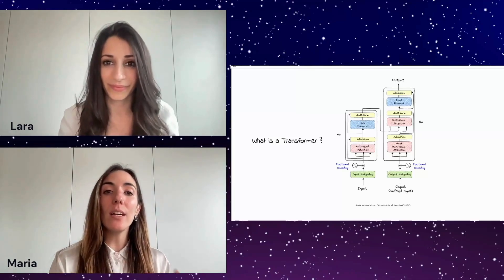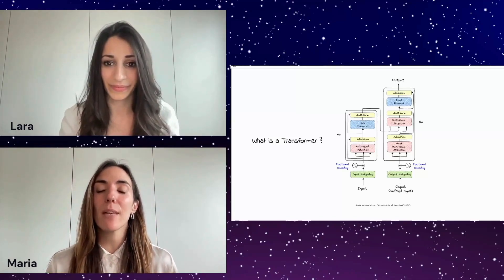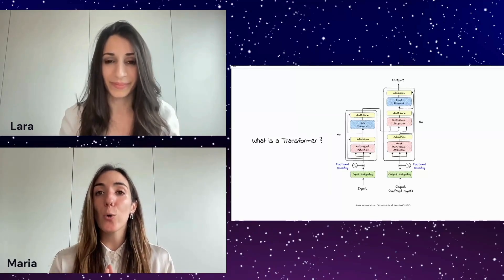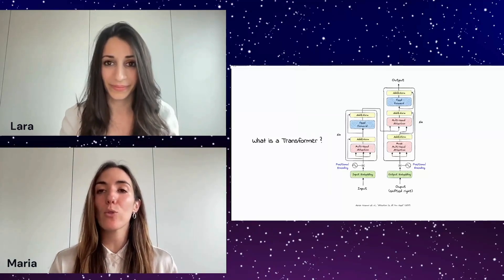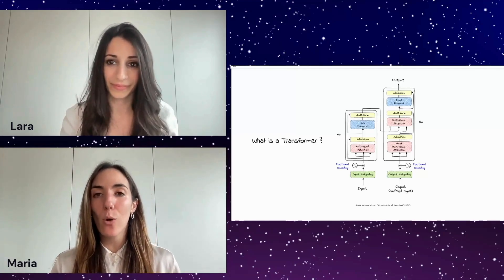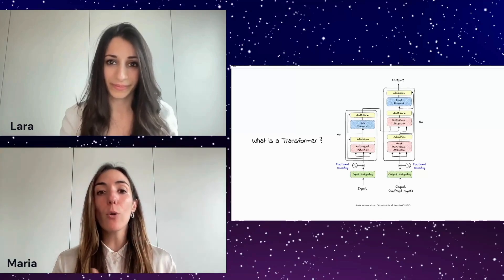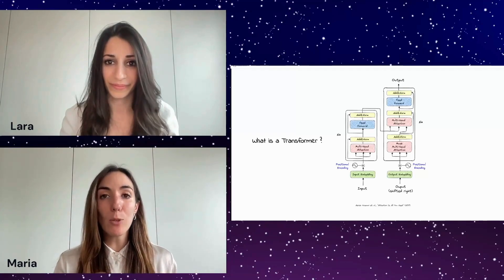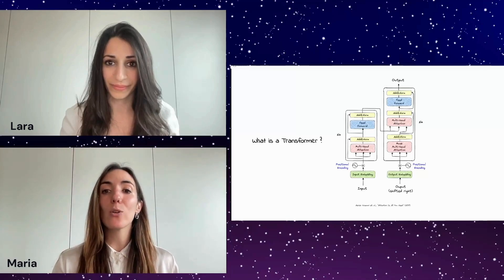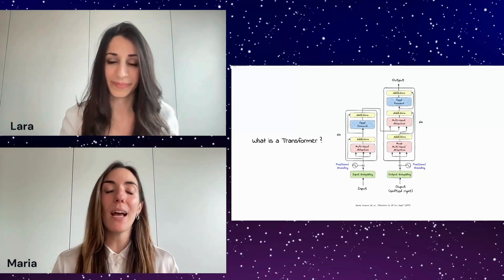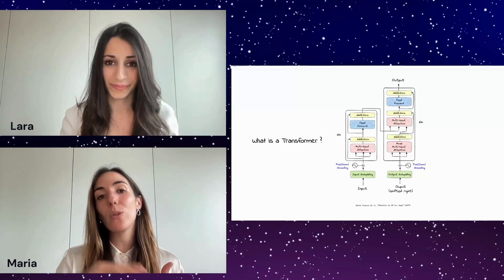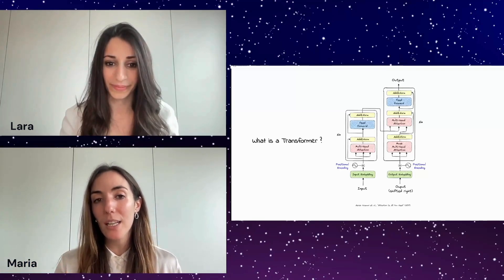Think of the encoder as the part of the system that understands and represents the input data. For example, if you're trying to translate a sentence from English to French, the encoder takes each word of the English sentence and transforms it into a format that captures its meaning, looking at all the other words simultaneously and considering relationships and context. The encoded information is then passed to the decoder for further processing.